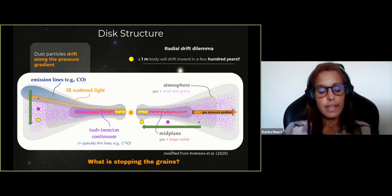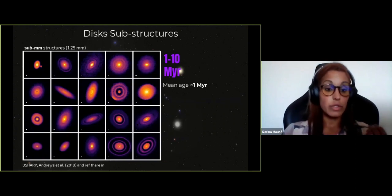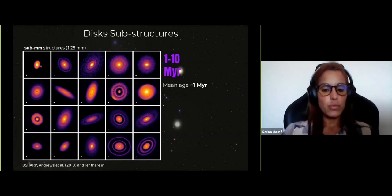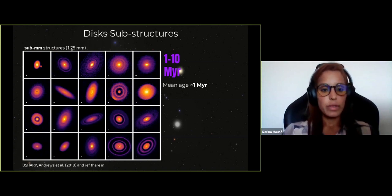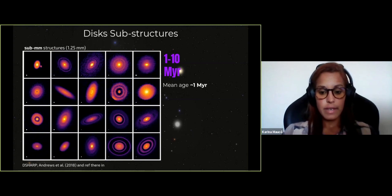High-resolution observations have been crucial here, especially with ALMA, which has been a revolution in this field. Here I show one example: the large program D-SHARP at 1.25 millimeters. You can see a sample of young protoplanetary disks, and they all have substructures — rings, gaps, spiral arms, or azimuthal asymmetries.